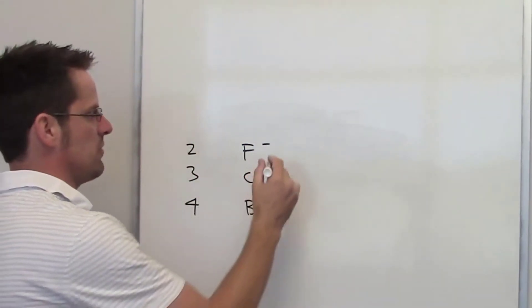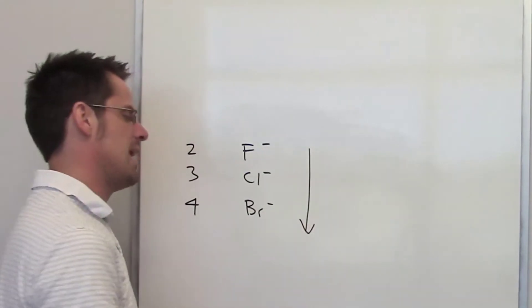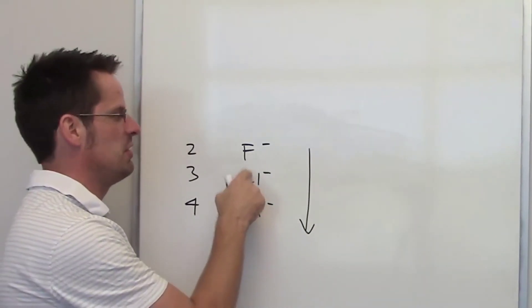Hence, the trend that we would see for these ions going down a column would be the same as we would for their neutral counterparts. Largest will be at the bottom, followed by the mediumest, followed by the smallest.